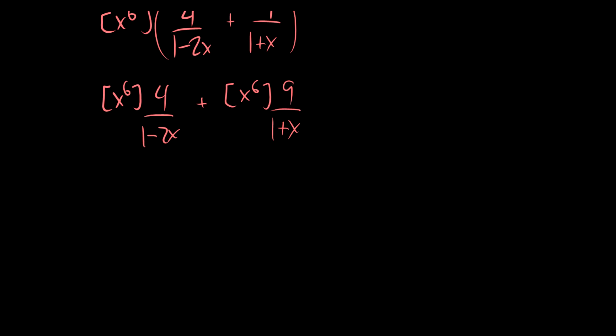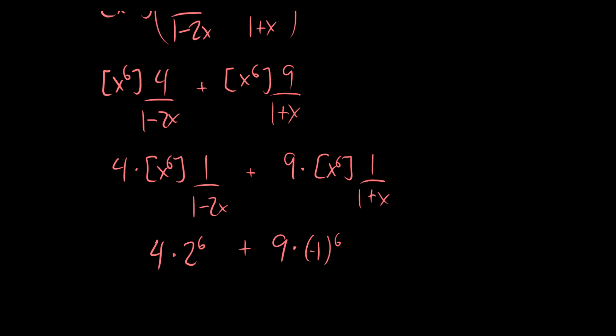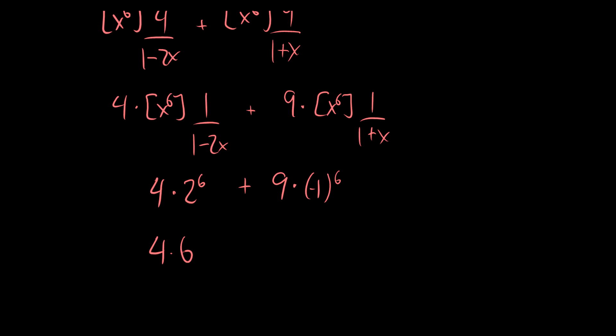So we know this is 4 times 2 to the 6 plus 9 times negative 1 to the 6. So this is going to be 4 times 64 plus 9, which is 263. I believe 2 to the 6 is 64. Yes, that is it. So this should be 263.